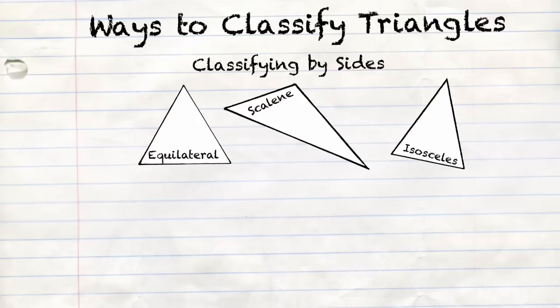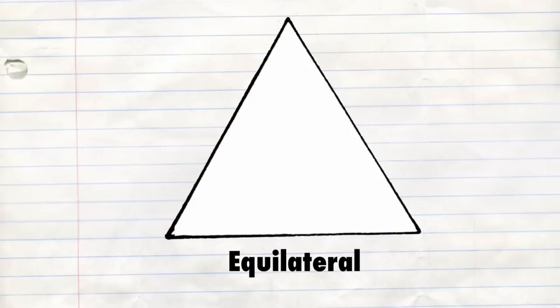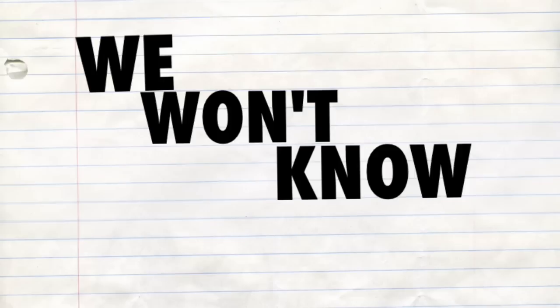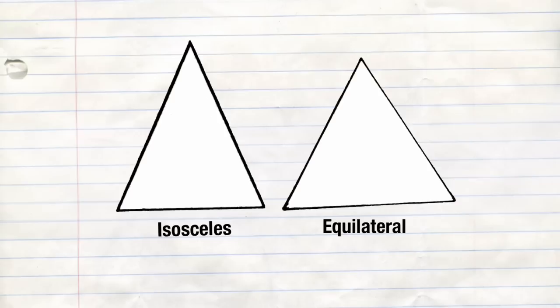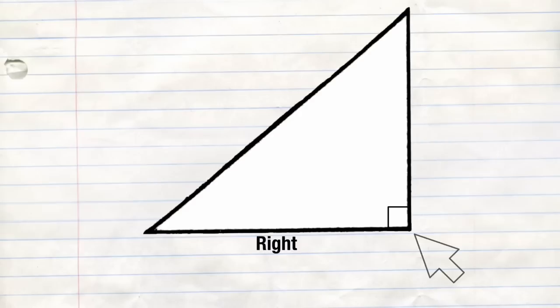Isosceles, scalene, equilateral, acute, obtuse, or right triangle — but we won't know till we know just what that means. Are there no equal sides, or are there two or three? Are the angles greater than or less than 90? Or is there one that measures exactly?